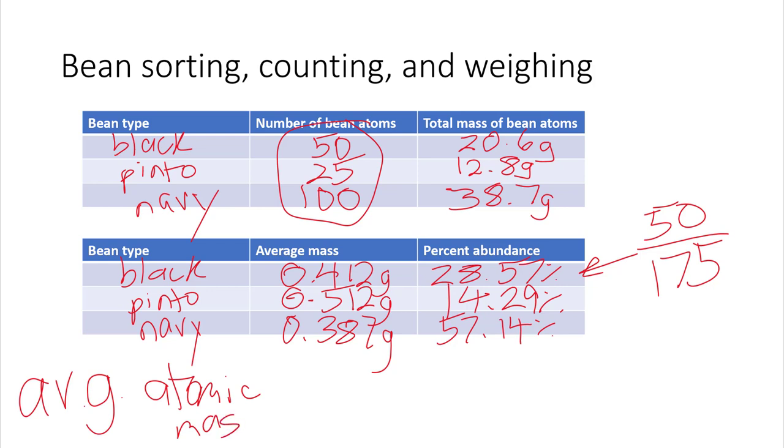And there was an equation given on the lab, which says that you can find the average atomic mass of a certain atom by taking the average mass of each isotope and multiplying it times the percent abundance of each isotope. So you do this for each one and you add them all together. So you do the first one: 0.412 times 28.57%, 0.512 times 14.29%, and 0.387 times 57.14%. And you get the average atomic mass of the bean isotope. So I'm going to write that out for you.